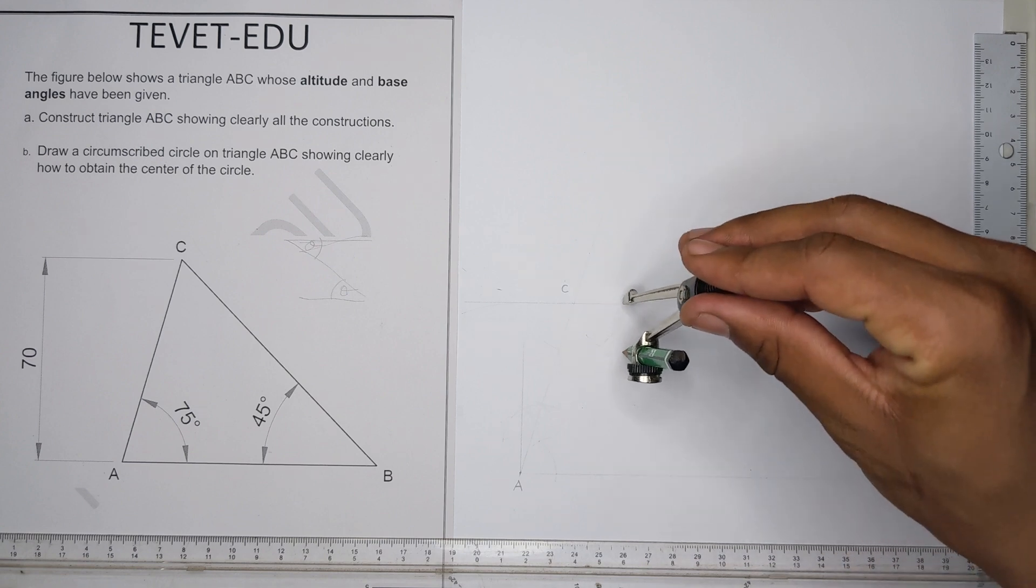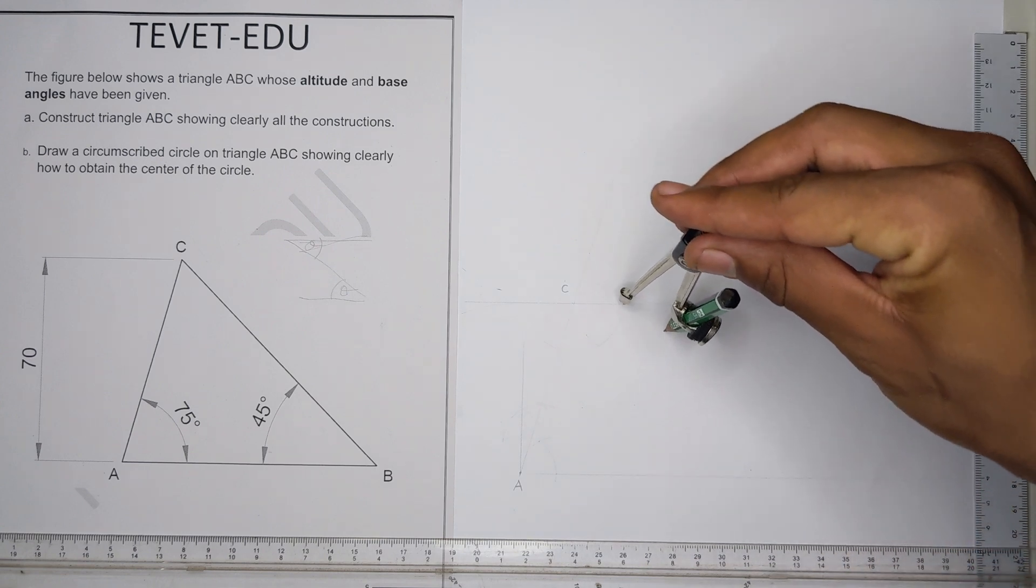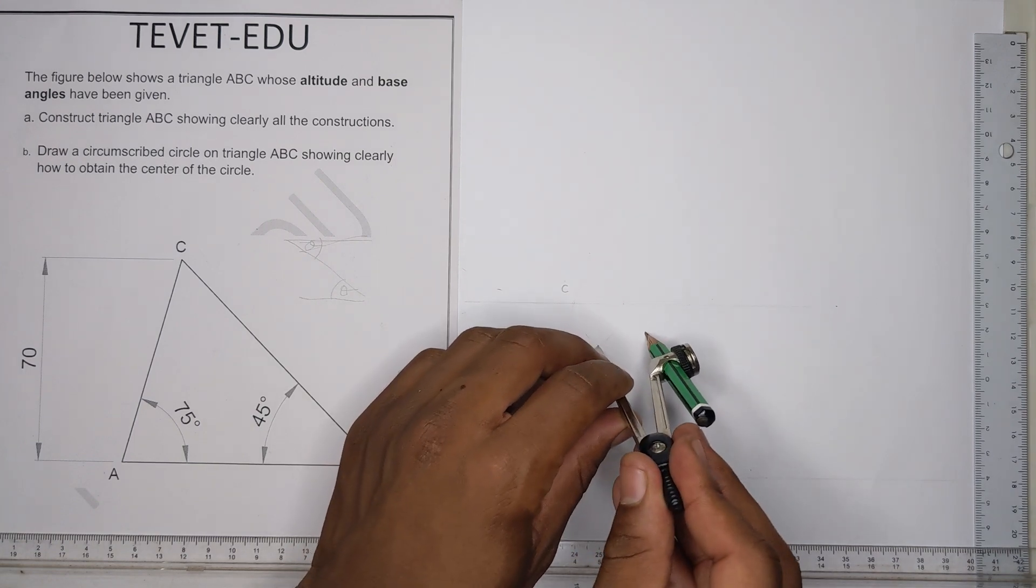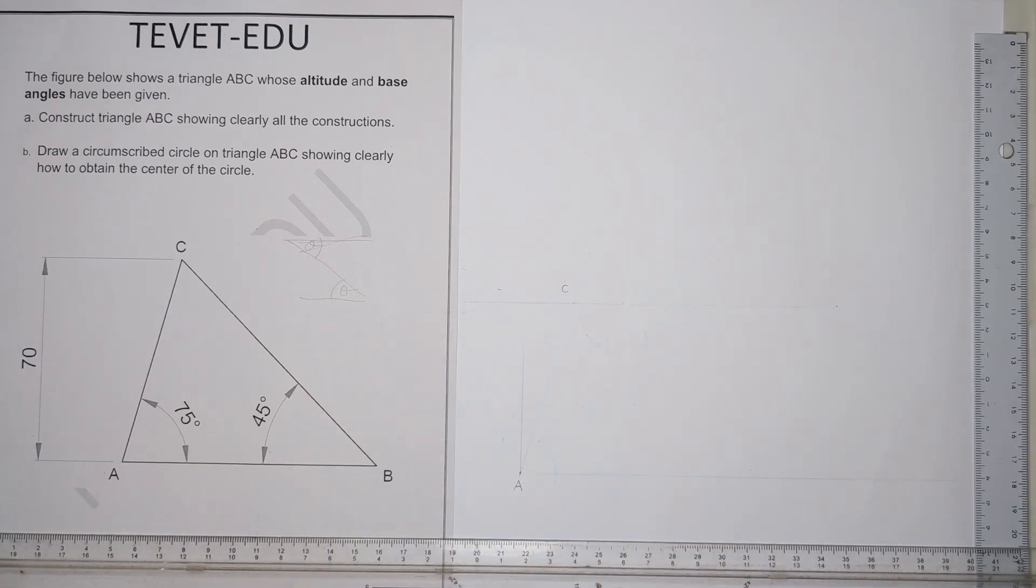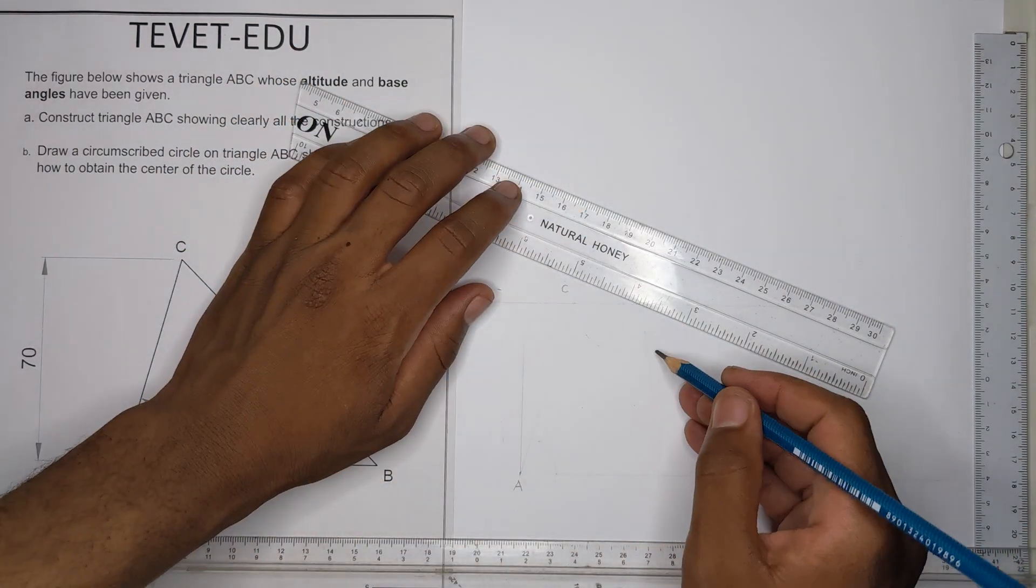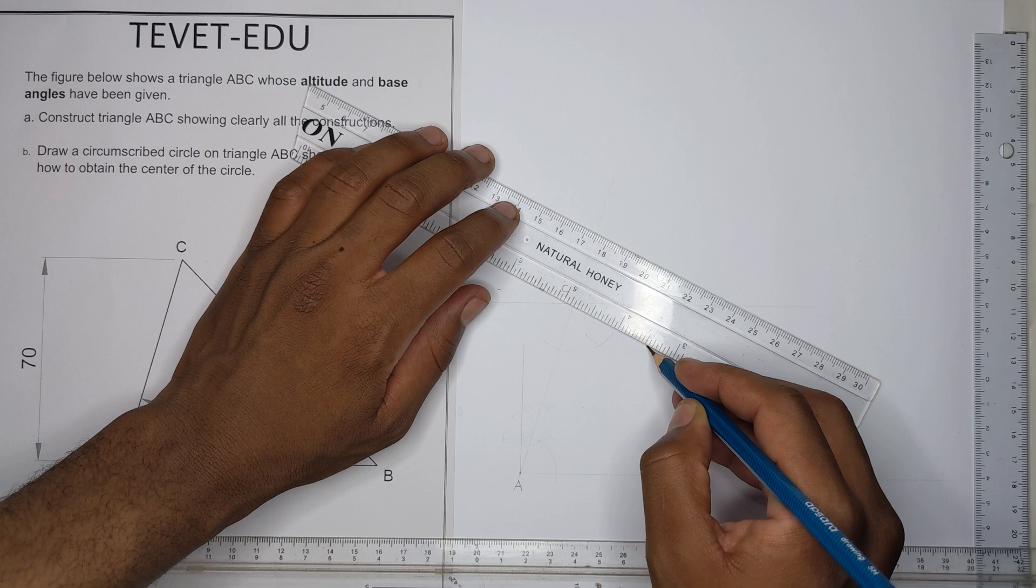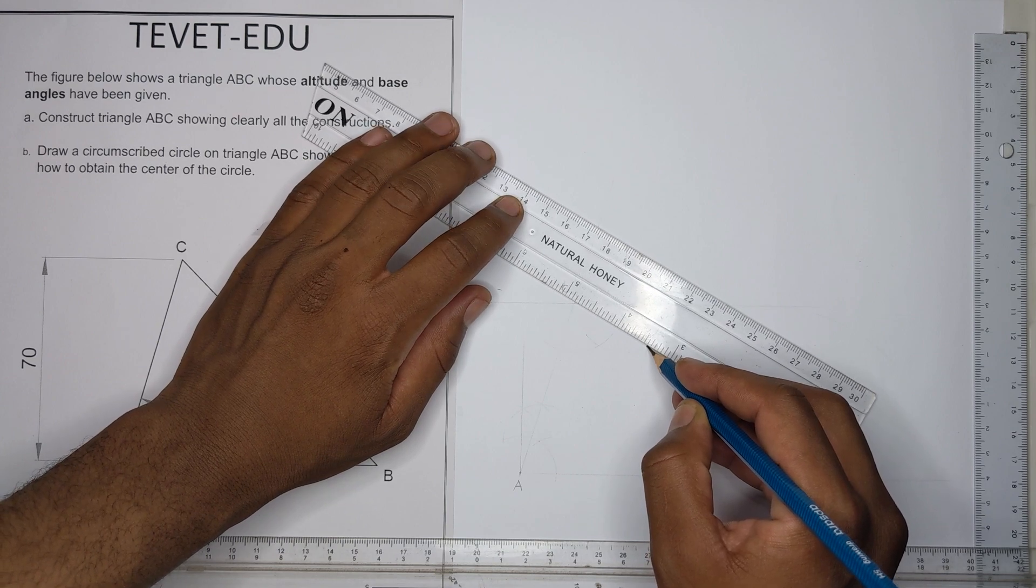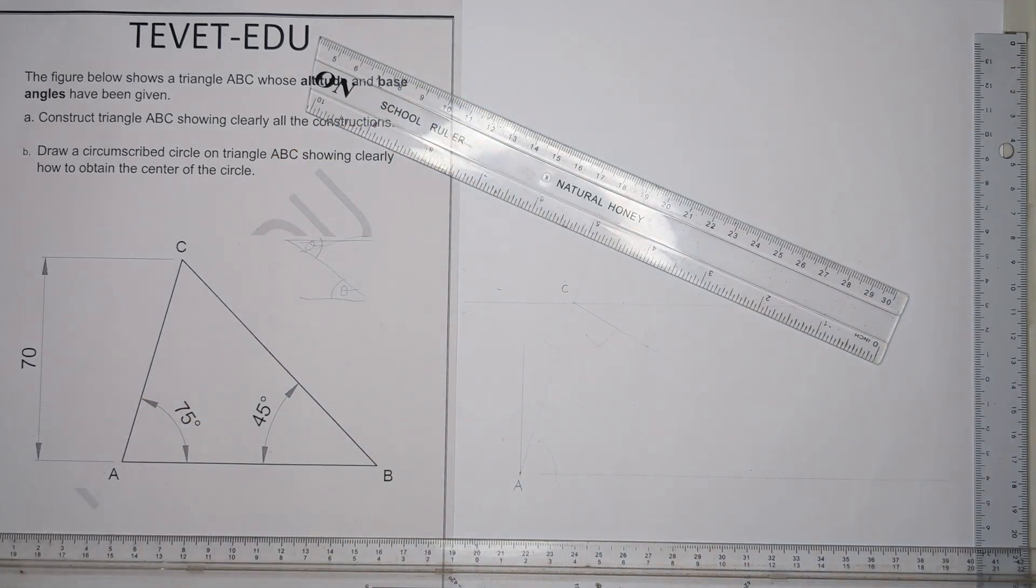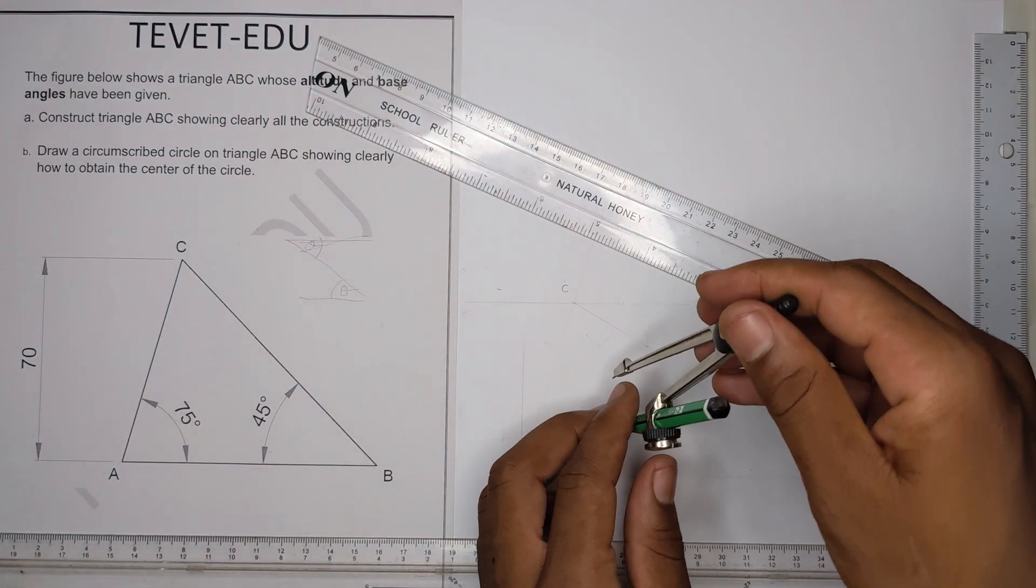We have 60, you can even use 30. So we bisect 60 so that we have 30 there. So we have 30 here. Then we bisect 30 again so that we get 45.